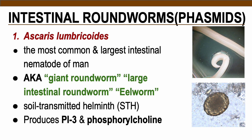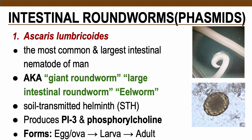Some references note that Ascaris lumbricoides produces PI3 — pepsin inhibitor 3 — which protects the parasite from digestive juices in the stomach. It also produces phosphorylcholine, which inhibits lymphocyte proliferation, decreasing multiplication of white blood cells in the area where the parasite resides. Ascaris, like all nematodes discussed here, undergoes three morphological changes: ova, larva, and adult.